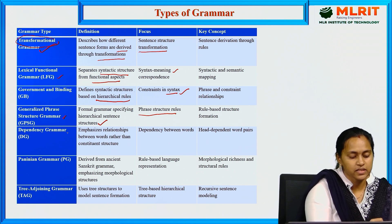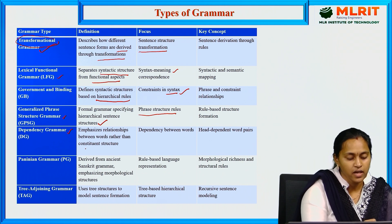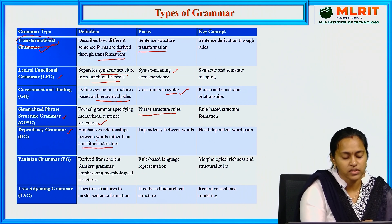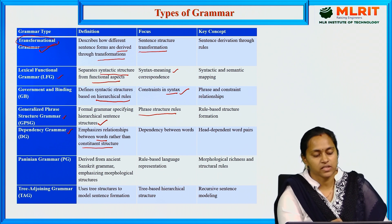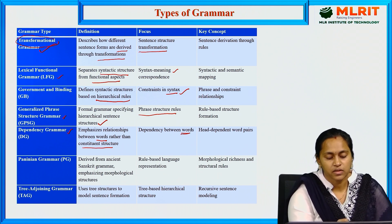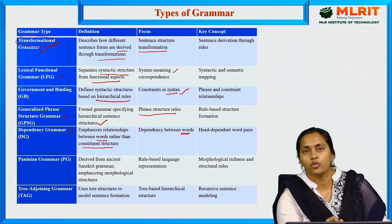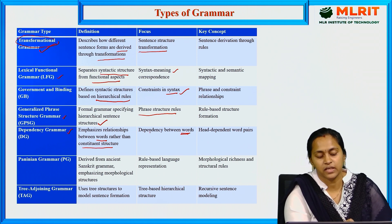Dependency grammar emphasizes the relationship between words rather than constituent structures. It depends on the dependency between words — that is, context dependency.